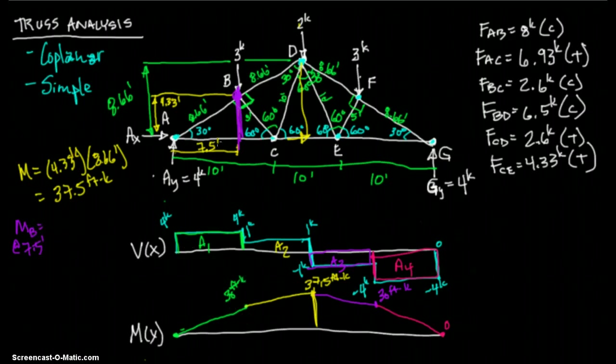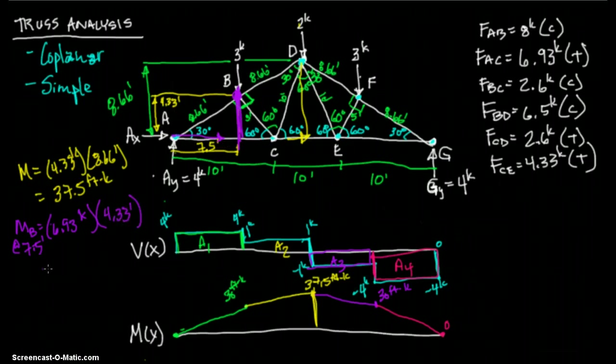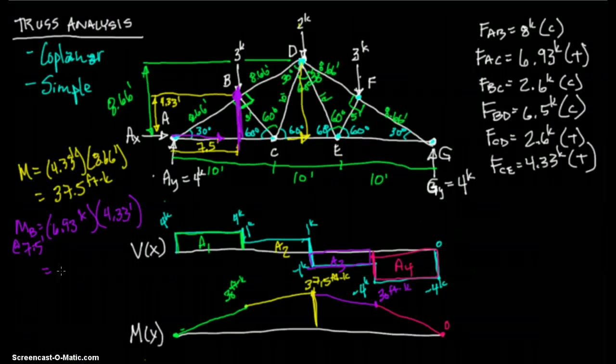You have AC equals 6.93 kips times, as we said, it's not 7.5, it's 4.33 feet. And that equals 6.93 times 4.33, equals 30. And that's what we said - hey, that's what we wanted.